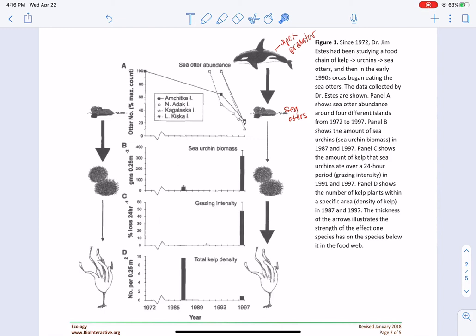The sea otters then eat a lot of urchins, so the urchin population gets very small. If there aren't many urchins, there isn't much eating of kelp going on, and the kelp population gets very large.